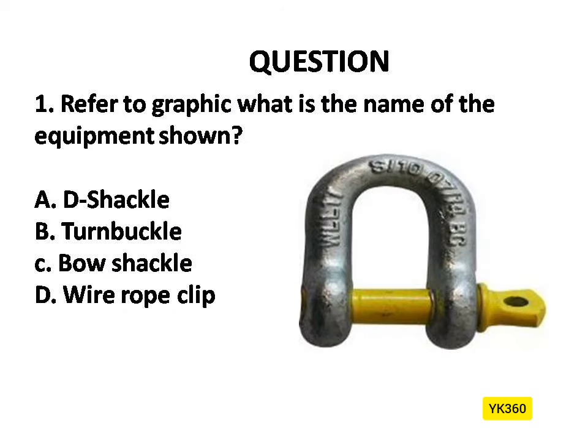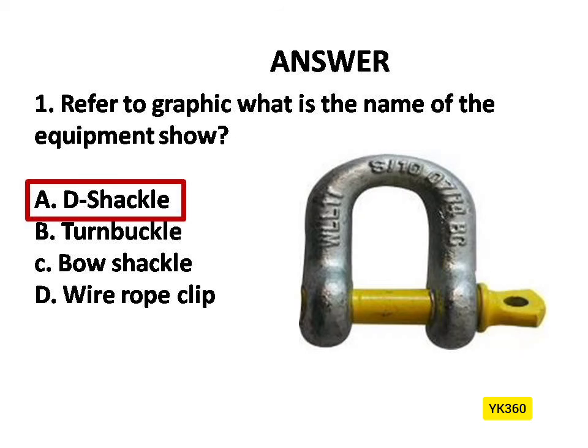Question Number 1. Refer to graphic — what is the name of the equipment shown? Options are: A. D Shackle, B. Turnbuckle, C. Bow Shackle, D. Wire Rope Clip. Answer is Option A: D Shackle.